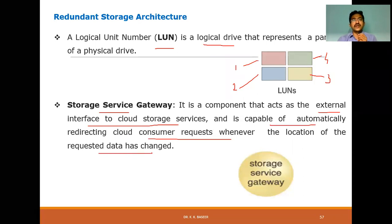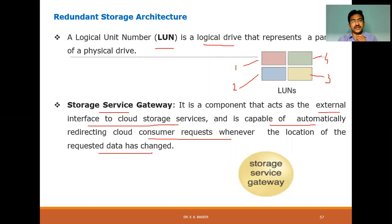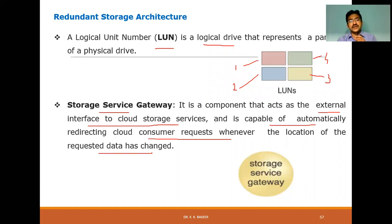The Storage Service Gateway helps when you make a request and the location of the requested data has changed. For example, think of it like an ATM: if you have a Union Bank account and you change your location to another Union Bank ATM, or even use an SBI or ICICI ATM, the request is still handled. Similarly, SSG automatically redirects cloud consumer requests whenever the data location changes.